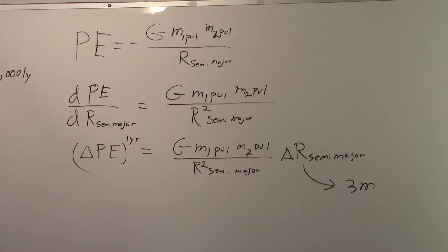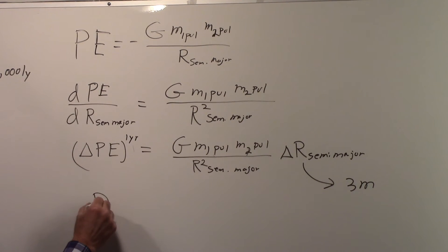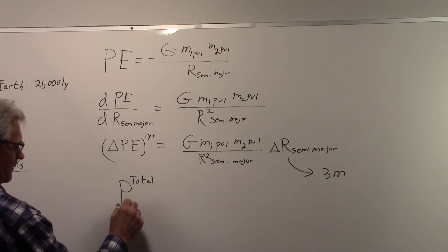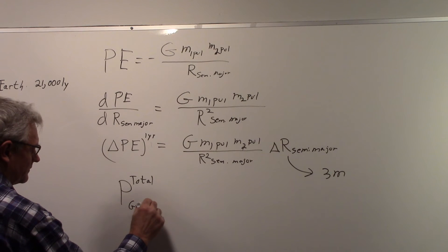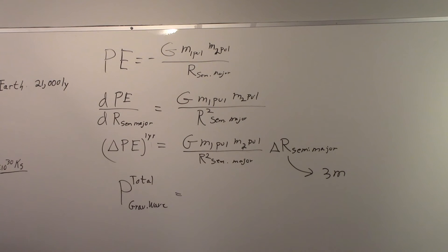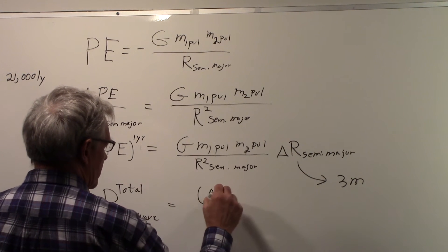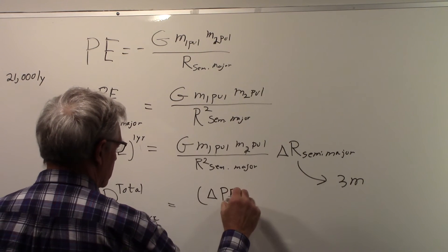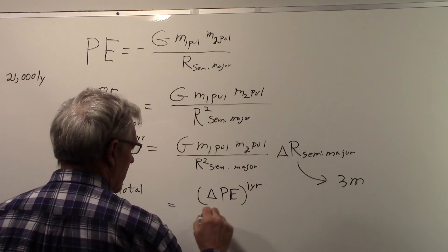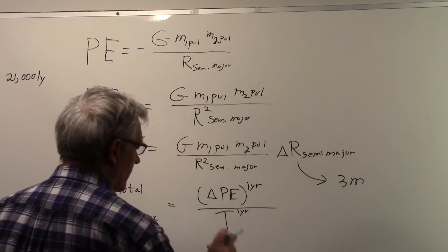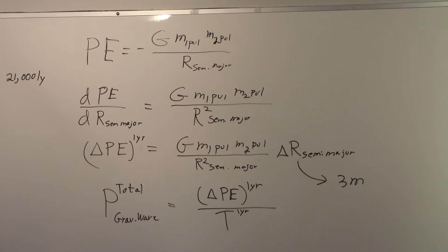But what we want to do is get to a power. So the total power that we can think of as being emitted in terms of a gravitational wave would be equal to this change in the potential energy over a year. That is in units of joules.